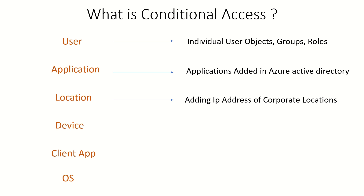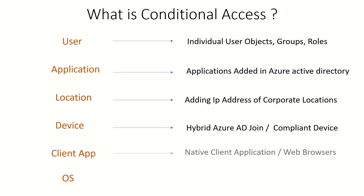For devices, in a conditional access policy there are only two options: include or exclude. The first is hybrid Azure AD joined, and the other is compliant devices. Hybrid Azure AD joined applies to Windows only, whereas compliant applies to Windows, Mac, iOS, and Android — all four platforms. The client app parameter focuses on whether the user is using a rich client application, a native application, or accessing a resource from a browser. The last parameter in scope is platform: whether it is Windows, Mac, iOS, or Android.